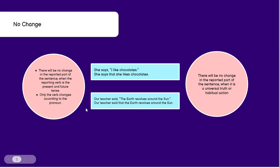For example, 'Our teacher said the earth revolves around the sun.' This is a universal truth — a truth accepted by the whole universe which will never change. So it will change in reported speech to 'Our teacher said that the earth revolves around the sun.' We can see the verb has also not changed here.